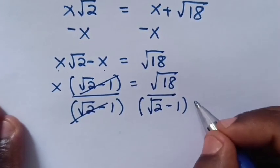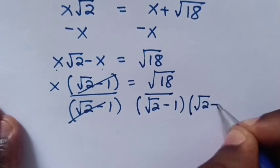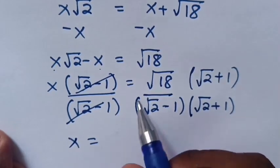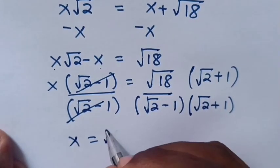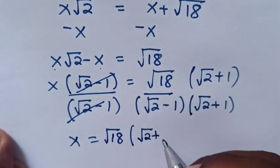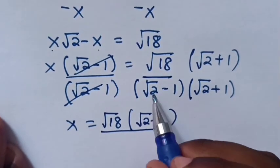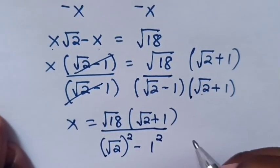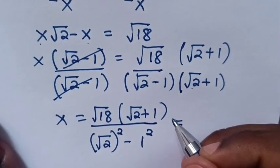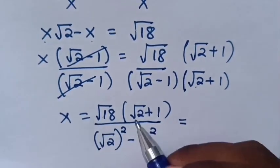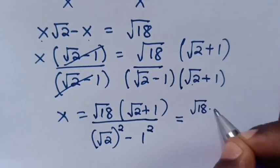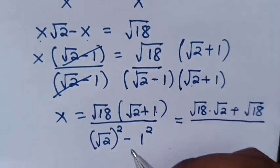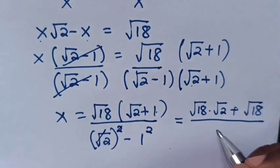Then we rationalize the denominator, multiplying by (square root of 2 plus 1) in both numerator and denominator. So, x is equal to square root of 18 times (square root of 2 plus 1) over (square root of 2 squared minus 1 squared), which simplifies to square root of 18 times (square root of 2 plus 1) over (2 minus 1).